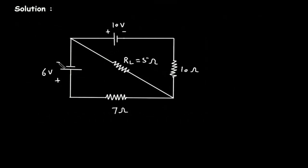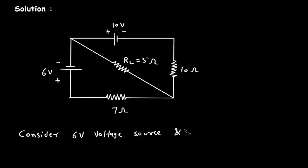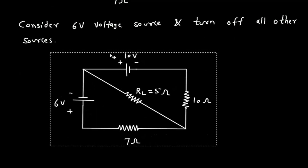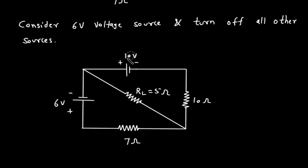First, we will consider the 6V voltage source and turn off all other sources. If we turn off the other voltage source, then that branch will be a short circuit.